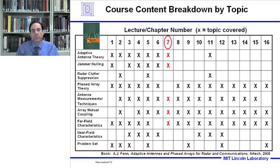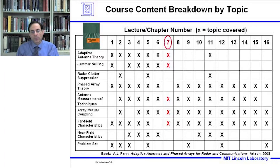Here's the course content breakdown by topic for lecture number seven. We'll be covering adaptive antenna theory in the context of jammer nulling, antenna measurement techniques, array mutual coupling effects, and near-field characteristics. The book, Adaptive Antennas and Phased Arrays for Radar and Communications, can be used to supplement this lecture.